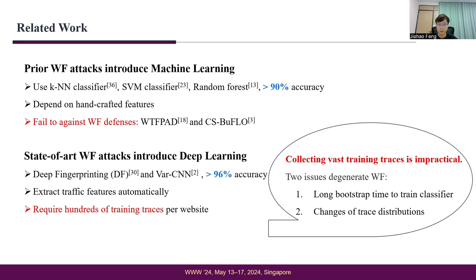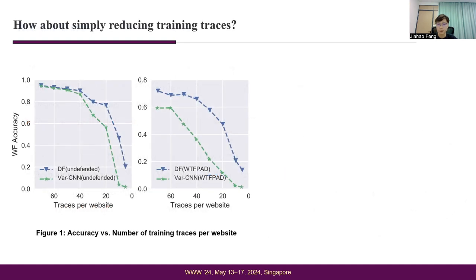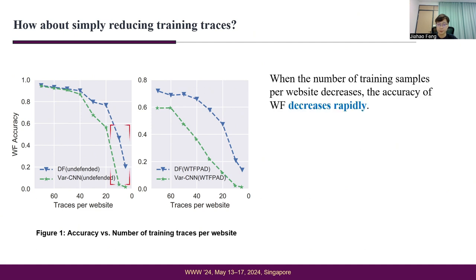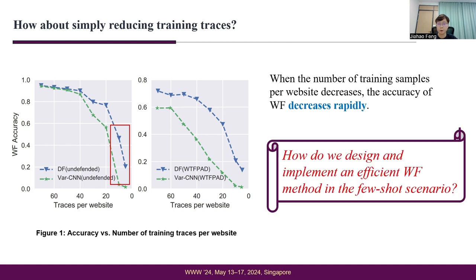Collecting robust training traces is costly and impractical. Simply reducing training traces causes the accuracy of deep learning-based WF attacks to decrease rapidly when the number of training traces decreases. Therefore, we face a challenging problem.